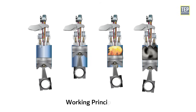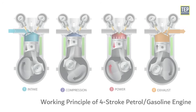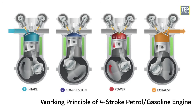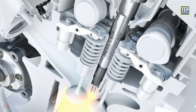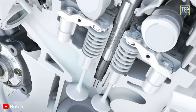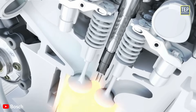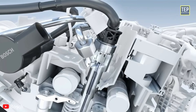The basic construction of a four-stroke diesel engine is the same as that of a four-stroke petrol engine, except that instead of a spark plug, a fuel injector is mounted in its place. A fuel pump supplies fuel oil to the injector at higher pressure.